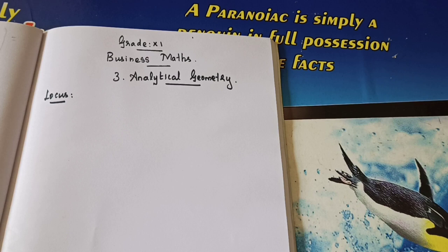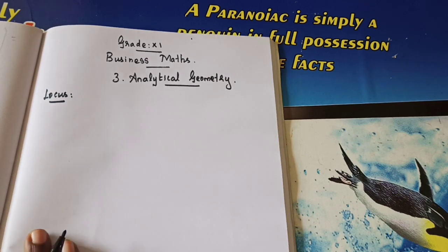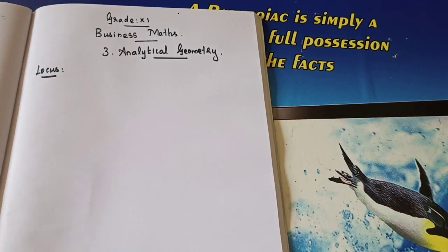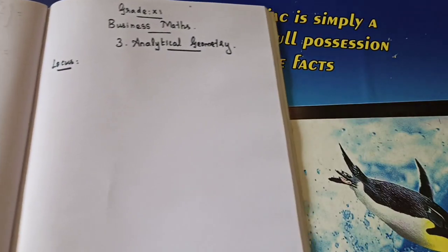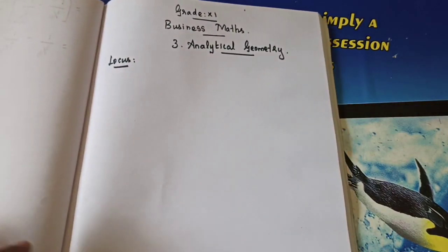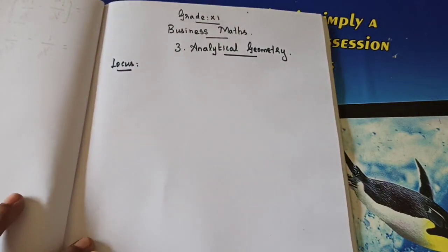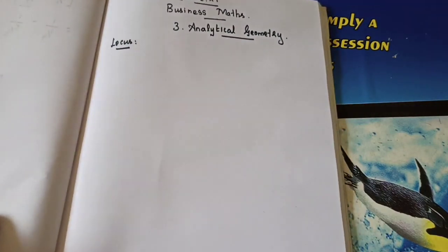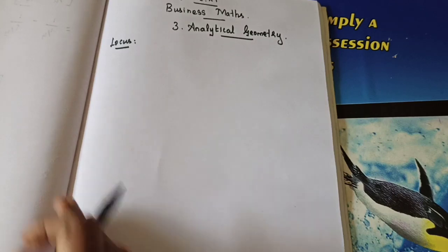Let's move to the first problem. Put down the heading 'Unit 3,' the side heading 'Locus,' write down the two-line definition, and then move directly to Example 3.1.